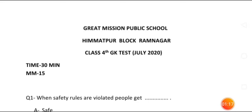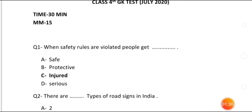So let's start today's video. Today we will discuss the GK test paper. This is your question paper. The first question was: when safety rules are violated, people get dashed — the answer is 'injured'. You can see the answer part is highlighted in bold.